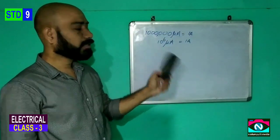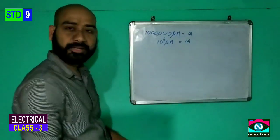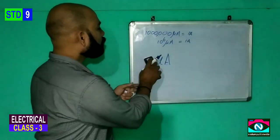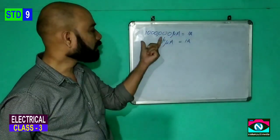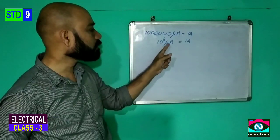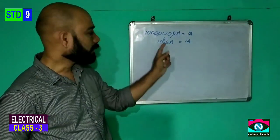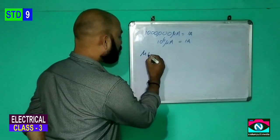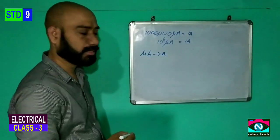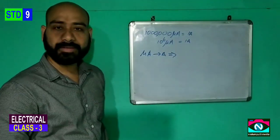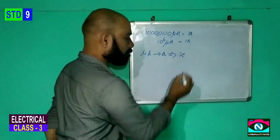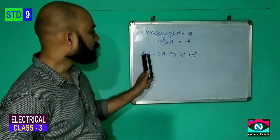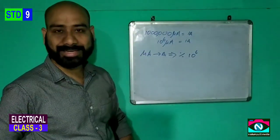We can also use microAmpere. MicroAmpere is represented by the symbol micro with capital A. 10 lakh, meaning 10 raise to 6, microAmpere is equal to 1 Ampere. To convert Ampere to microAmpere, we divide by 10 raise to 6.